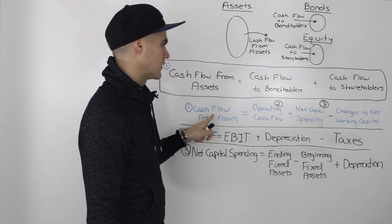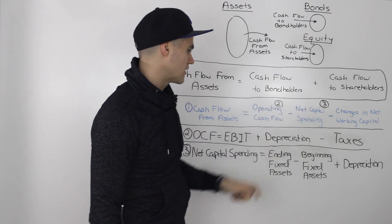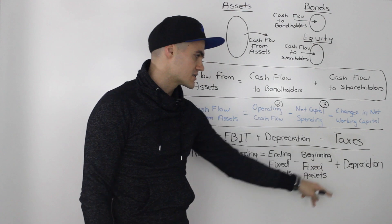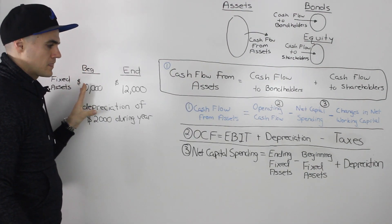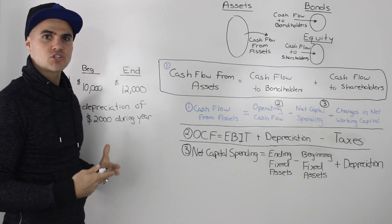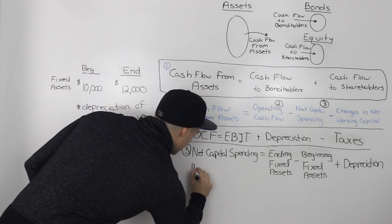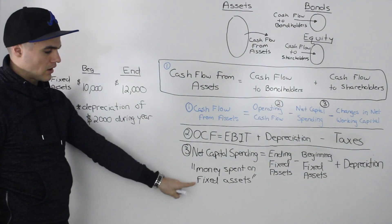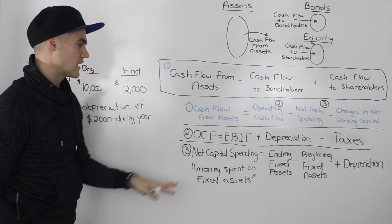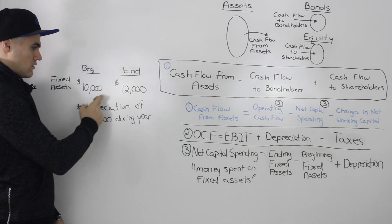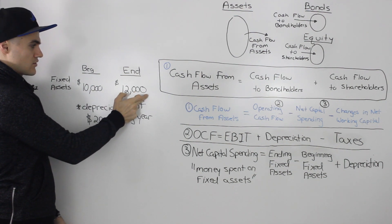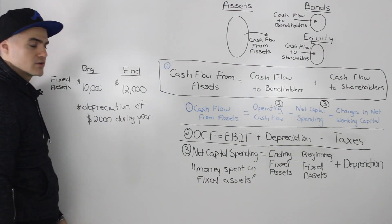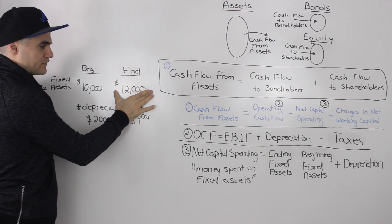The next component from the cash flow from assets formula is net capital spending — footnote three. Net capital spending is basically how much money is spent on fixed assets. The general formula is: ending fixed assets minus beginning fixed assets plus depreciation. To illustrate, let's do an example intuitively. At the beginning of the year there's $10,000 worth of fixed assets, at the end there's $12,000, and during the year fixed assets depreciate by $2,000.